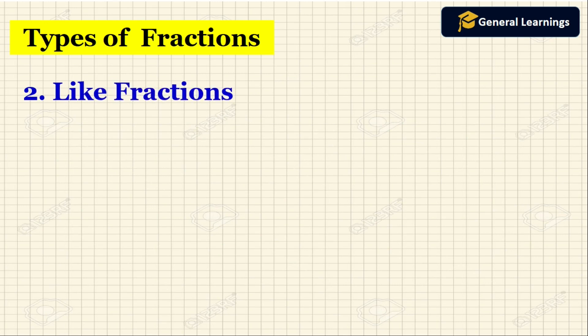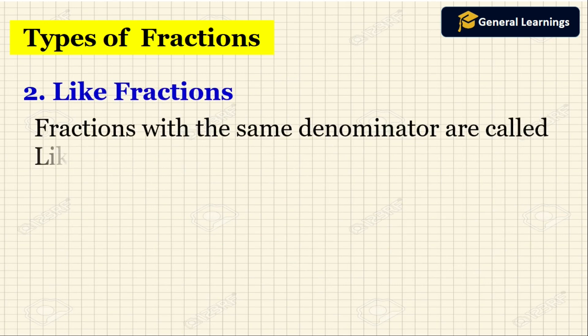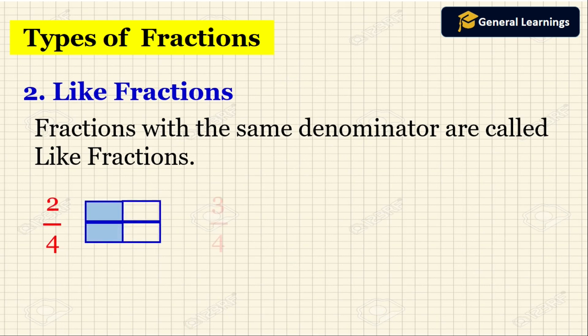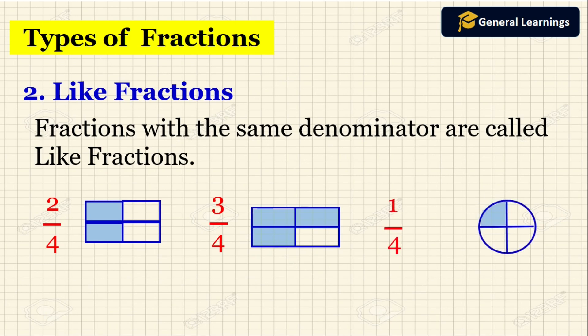Next, like fractions. Fractions with the same denominator are called like fractions. For example: 2 by 4, 3 by 4, 1 by 4. Here the denominator is 4 in all cases. So all these fractions have the same denominator as 4. Therefore 2 by 4, 3 by 4, and 1 by 4 will be called like fractions.